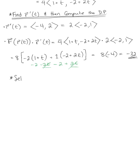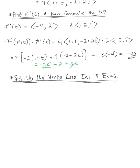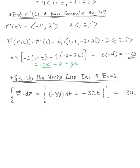Now we are ready to set up the line integral and evaluate to find our work. The vector line integral over curve C of the vector field dotted with dr is rewritten as the integral from 0 to 1 of -32 dt. This gives us -32t evaluated from 0 to 1, for a final answer of -32.